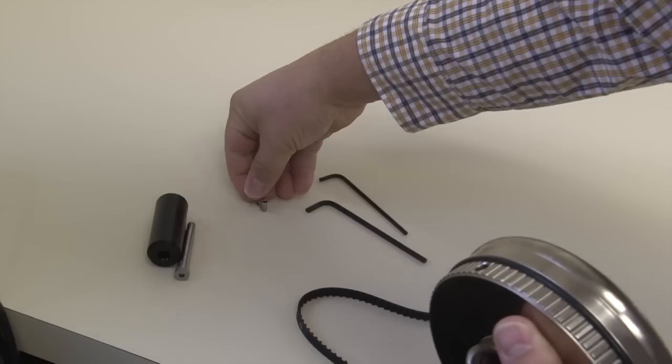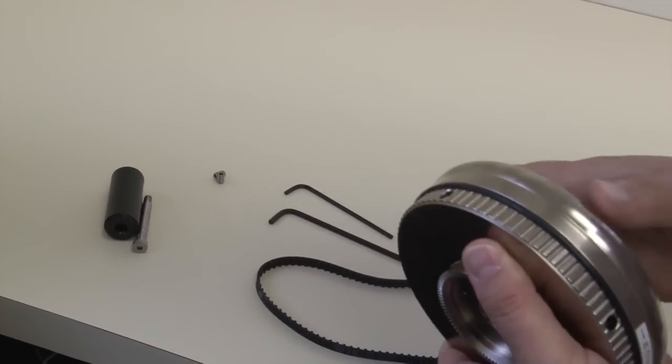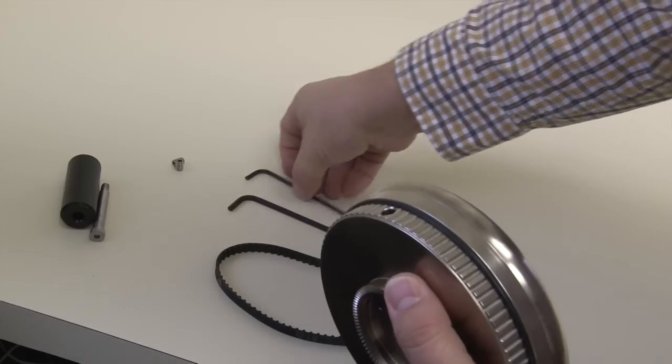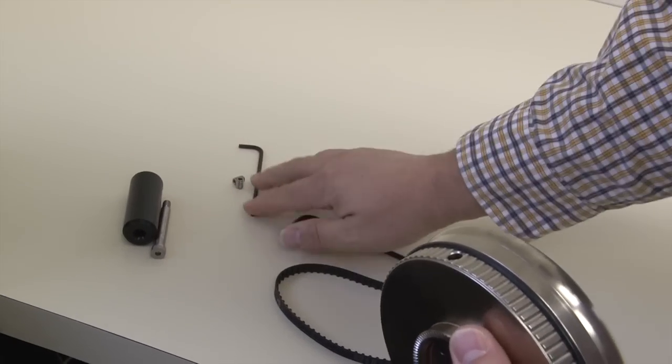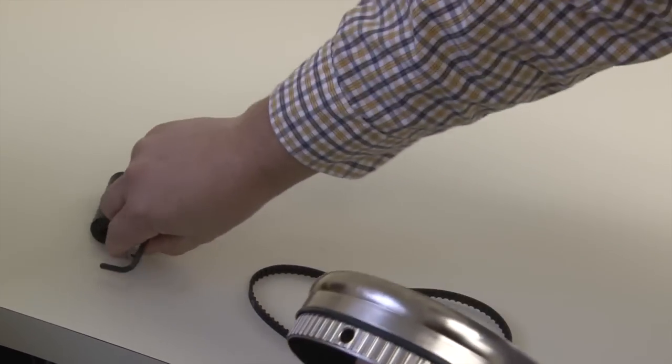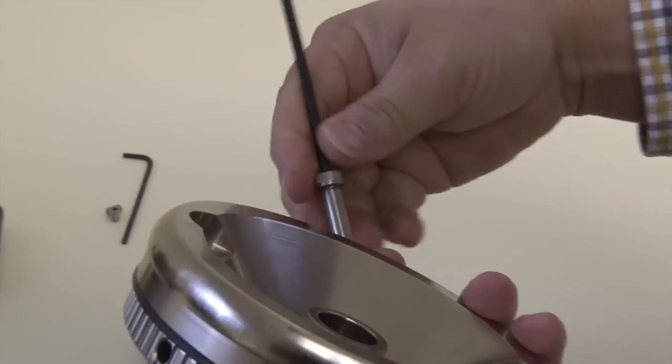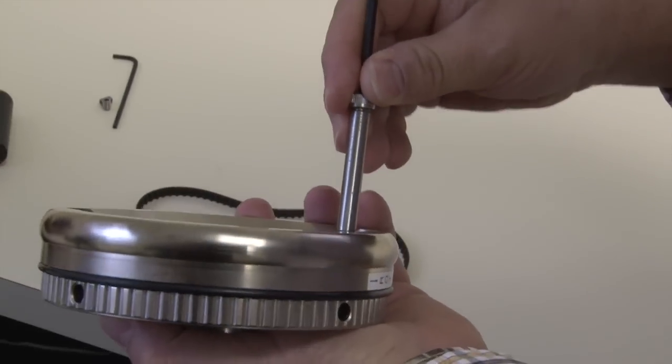Other parts. We include the Allen wrenches that you would need. One Allen wrench is for those set screws that you're not going to use. The other one is for our shoulder bolt to attach the hand crank handle.